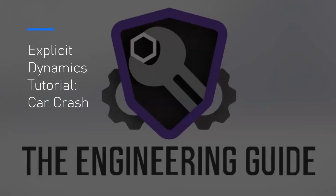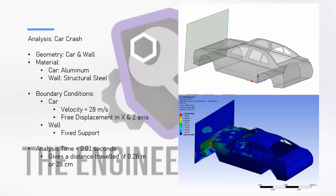Welcome back. Today we are going to be doing a car crash simulation using the explicit dynamics module in ANSYS. There are a couple of things to mention before we set up the simulation so we understand the problem. First, we have two different geometries: the car and the wall, both modeled using surface bodies. This allows for less computational power while still giving a very accurate result.